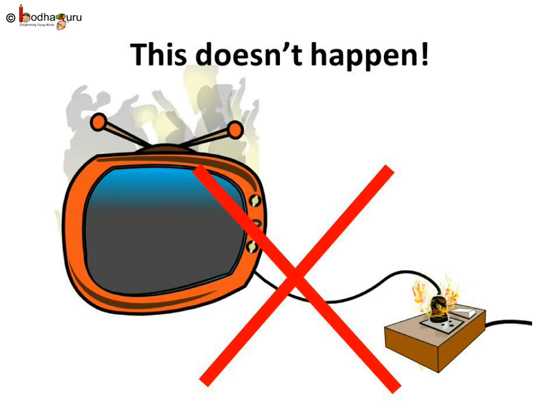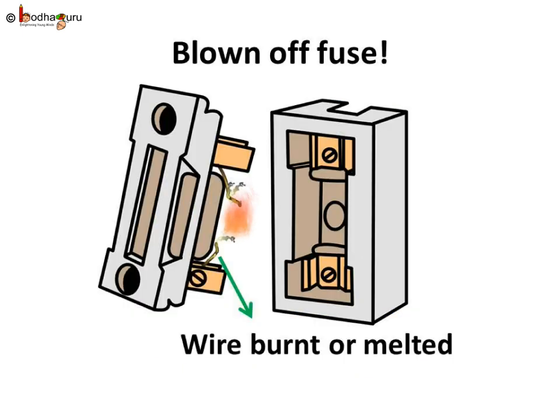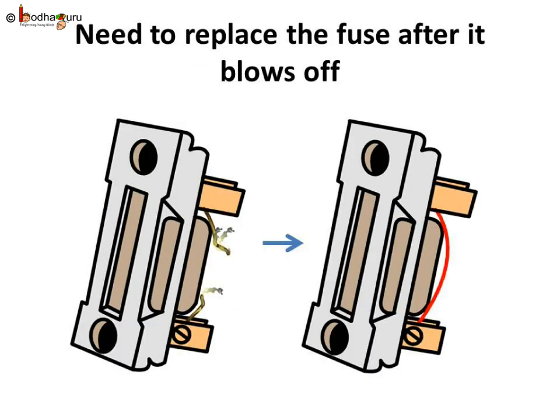There is a maximum limit on the current which can safely flow through a circuit. If, by accident, the current exceeds this safe limit, the wires may become overheated and may cause fire. But if a proper fuse is there in the circuit, it will blow off and break the circuit. An electric fuse is thus a safety device which prevents damage to electrical circuits and even fires. But once burnt, the fuse needs to be replaced with another one.